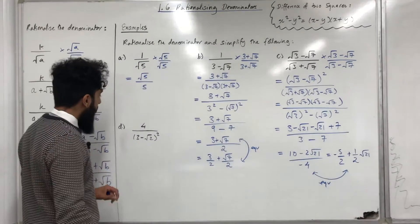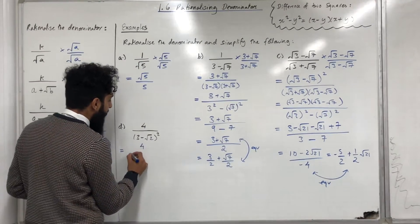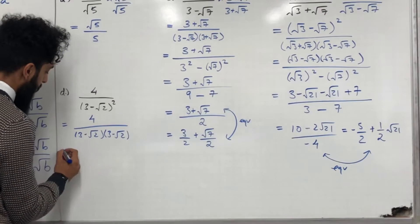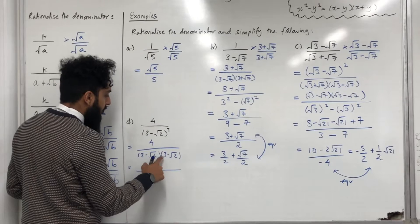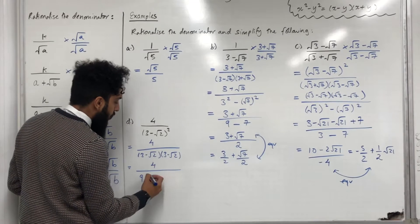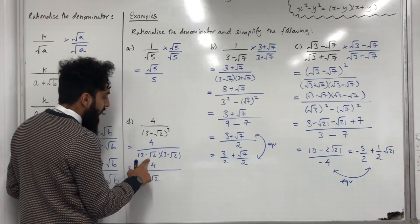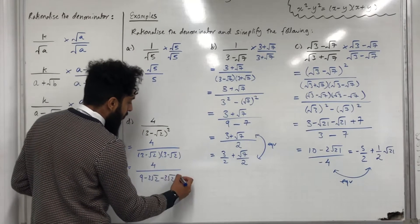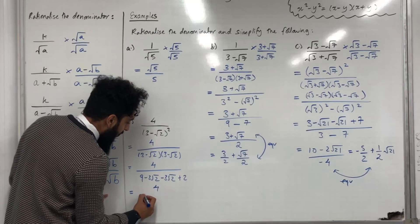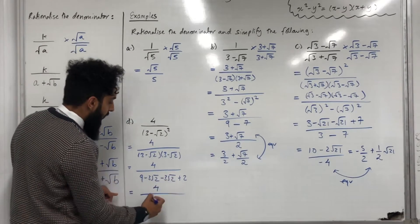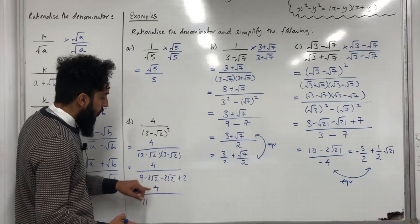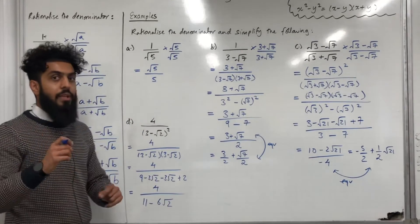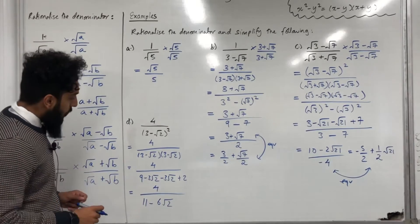Moving on to part d. The very first step is to expand the denominator by writing it in two brackets: 3 × 3 = 9; 3 × (−√2) = −3√2; (−√2) × 3 = −3√2; (−√2) × (−√2) = +2. Simplifying gives us 4 over (9 + 2 − 6√2), which is 4 over (11 − 6√2). This fraction has not been rationalised since the denominator still contains a square root.